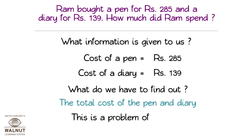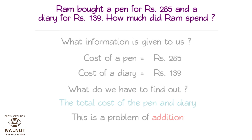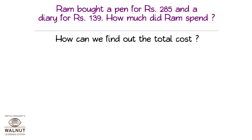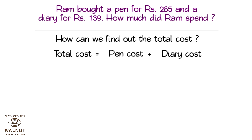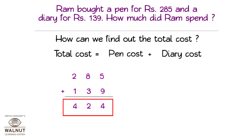This is a problem of addition. How can we find out the total cost? Total cost is equal to pen cost plus diary cost. That is 285 plus 139. The final answer is 424. Ram spent rupees 424.